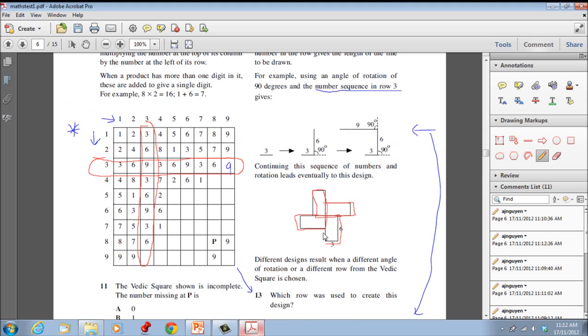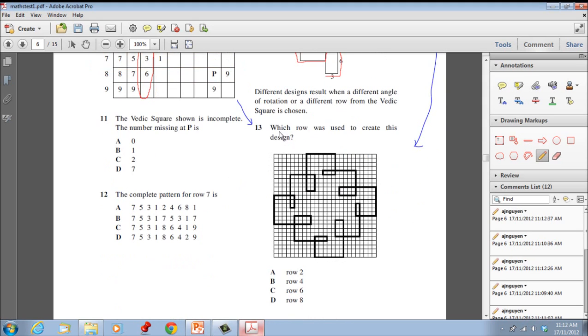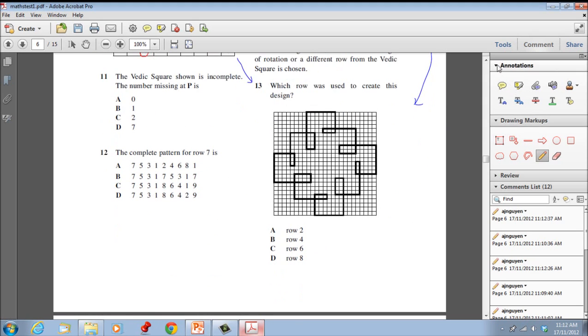So given this, this is key information here. Row 3 and you've found the number pattern. When you look at it, it's actually quite an easy question. They're asking you now which row was used to create this design. First thing you'd have to do is find out what the number pattern is.